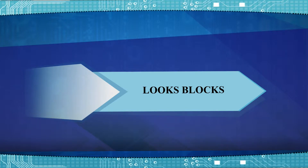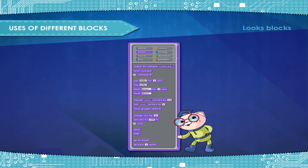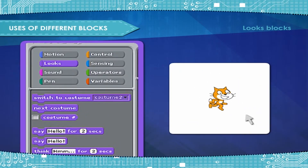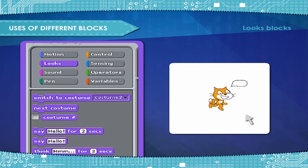Looks Blocks are the blocks that control a sprite's look. Scratch has many Looks Stack Blocks, which include: Say for seconds — a speech bubble appears over the sprite and stays for the specified amount of time.